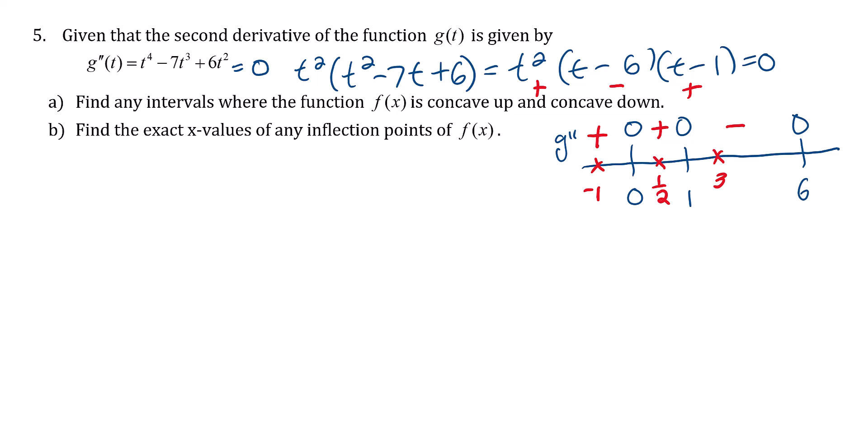Now let's put in 7 and we'll have all our intervals tested. The first term is always positive. 7 minus 6 is positive. 7 minus 1 is positive. So everything's positive. We're ready to answer the questions.